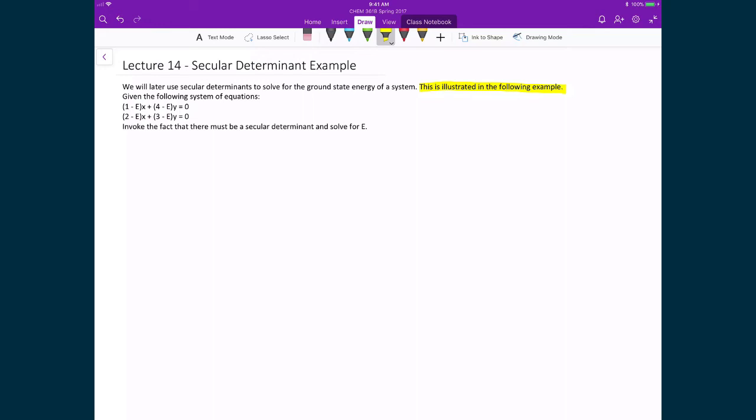This will be illustrated in this following example, where we have a system of equations: (1 minus e)x plus (4 minus e)y equals 0, and (2 minus e)x plus (3 minus e)y equals 0. We're going to invoke the secular determinant because x and y are non-trivial. We're going to solve for this common constant e that appears in all of these a constant terms.